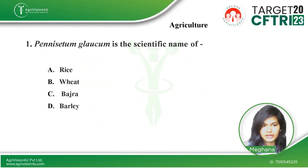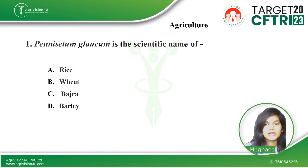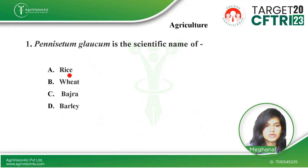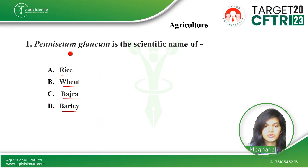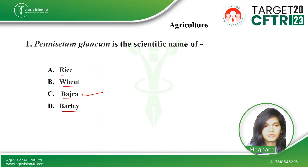The first question is from agriculture. Pennisetum glaucum is the scientific name of — the first option is rice, the second is wheat, the third is bajra, and the fourth is barley. The right option for this question is bajra — the scientific name of bajra is Pennisetum glaucum.